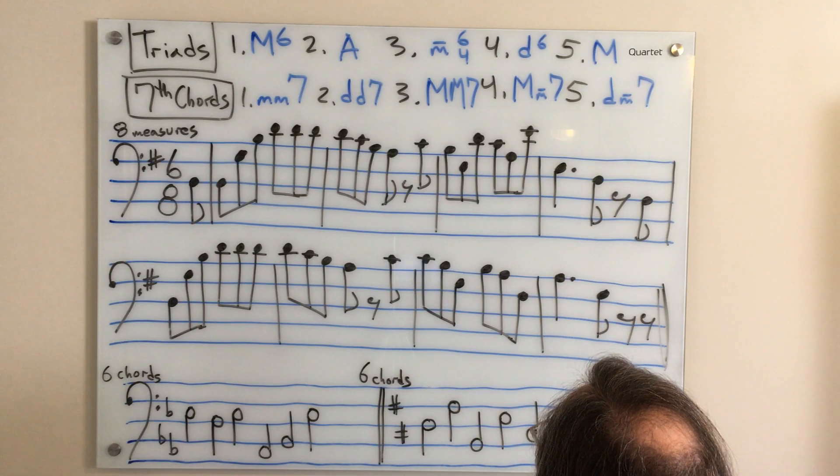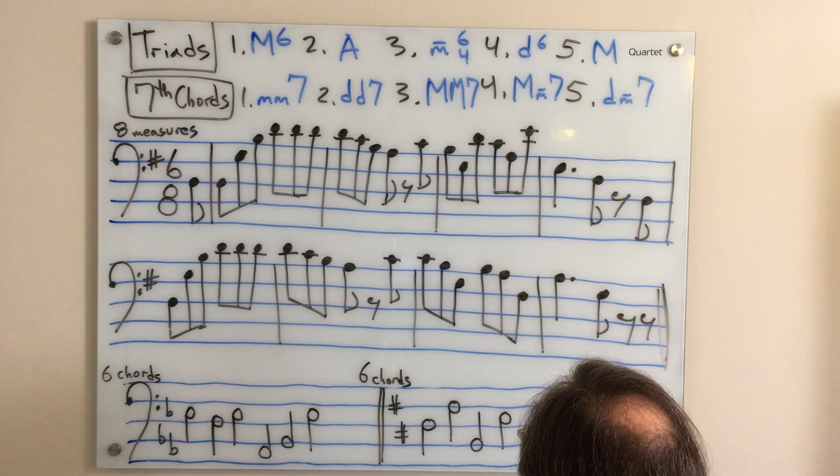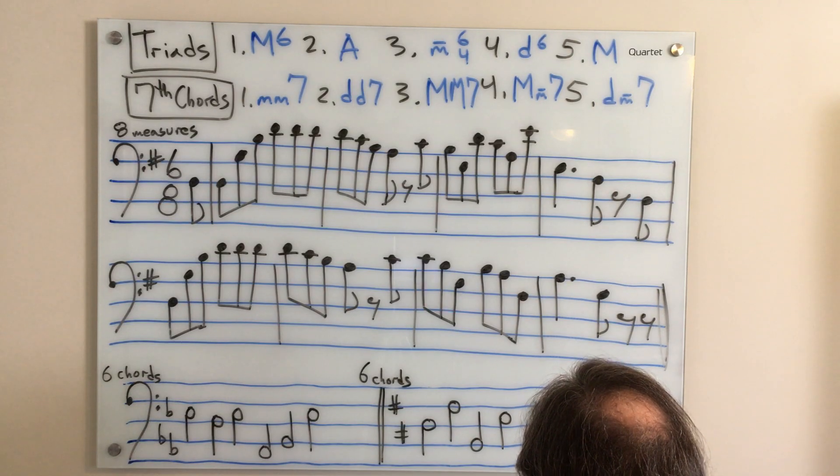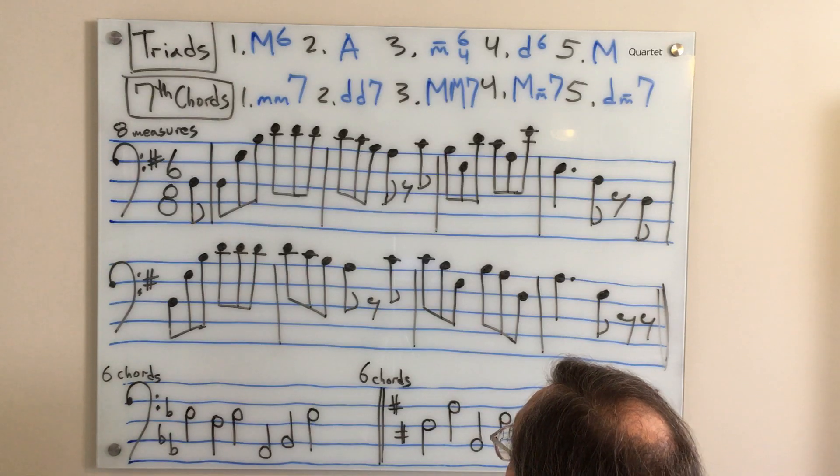And here we get some arpeggiations of triads after we do this. Fa, mi, do, sol. That's our one chord. Fa, re, la. That's our two chord. Do, ti. Then we repeat.